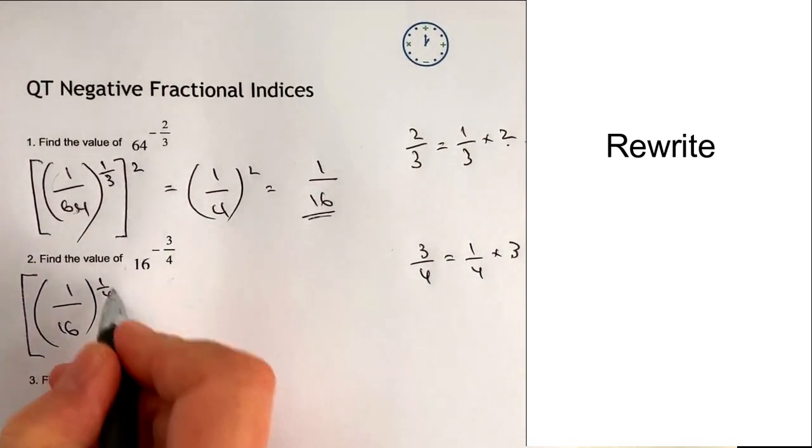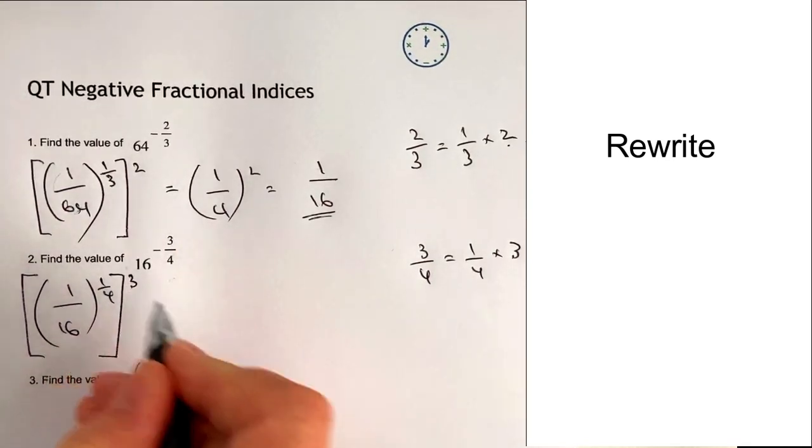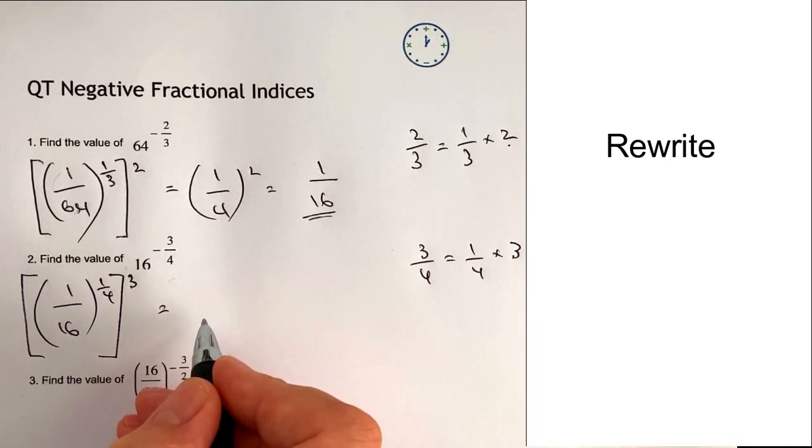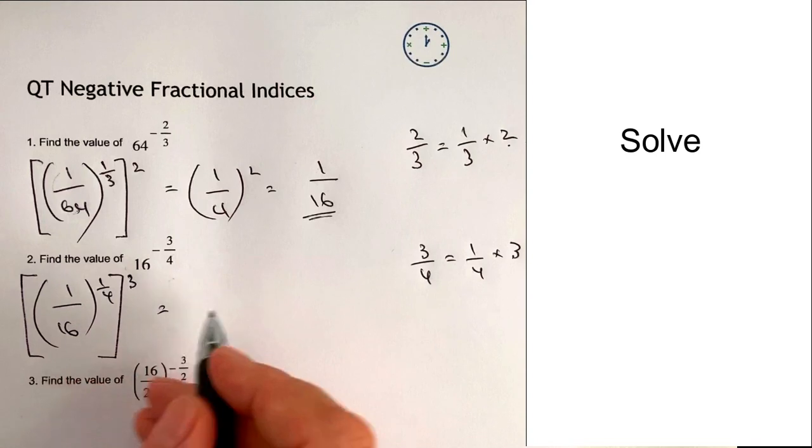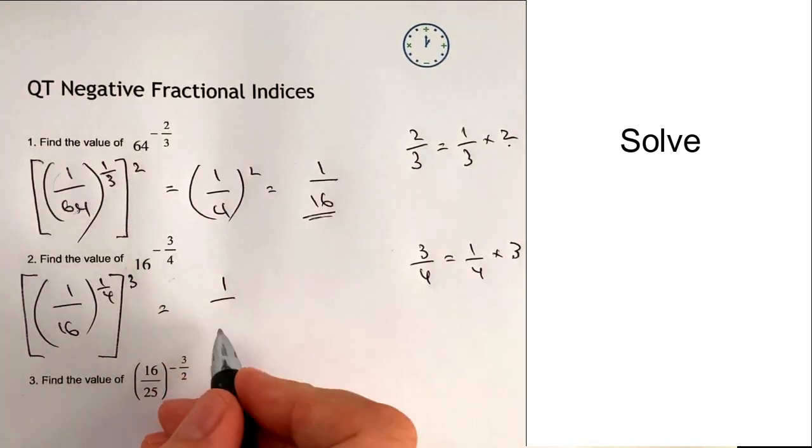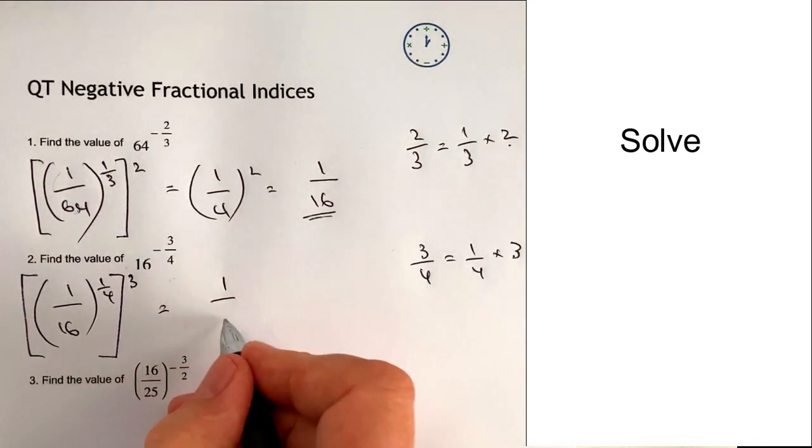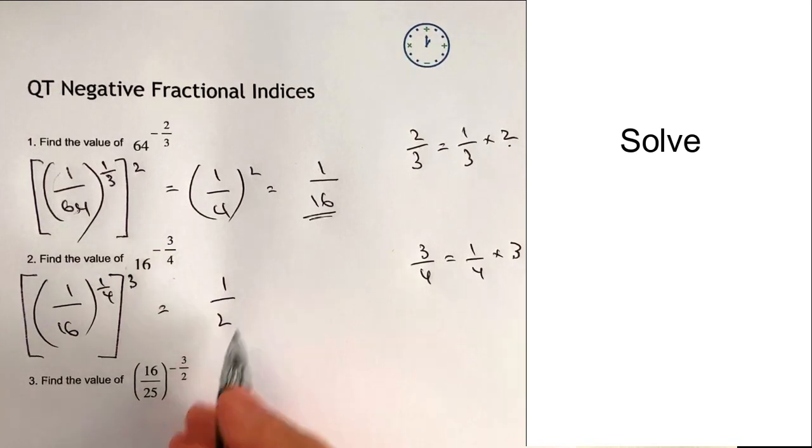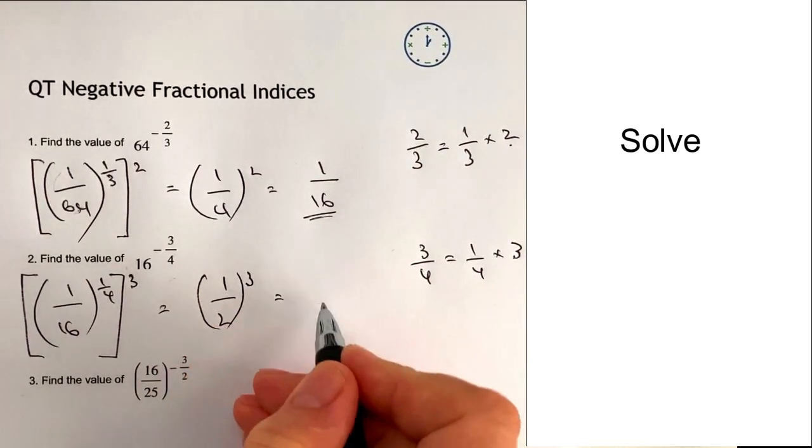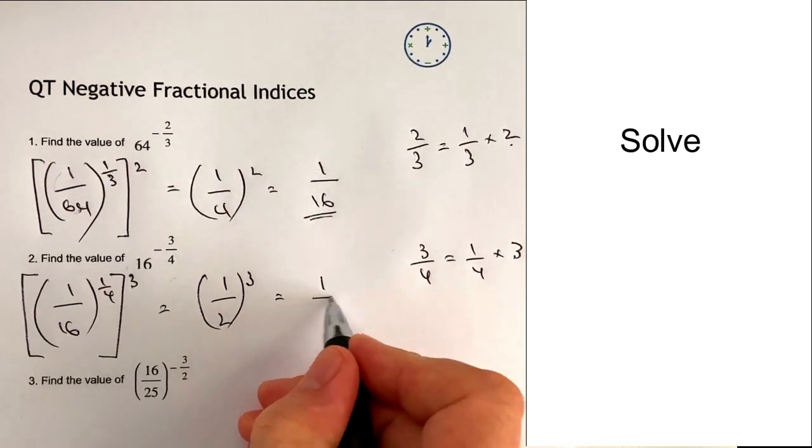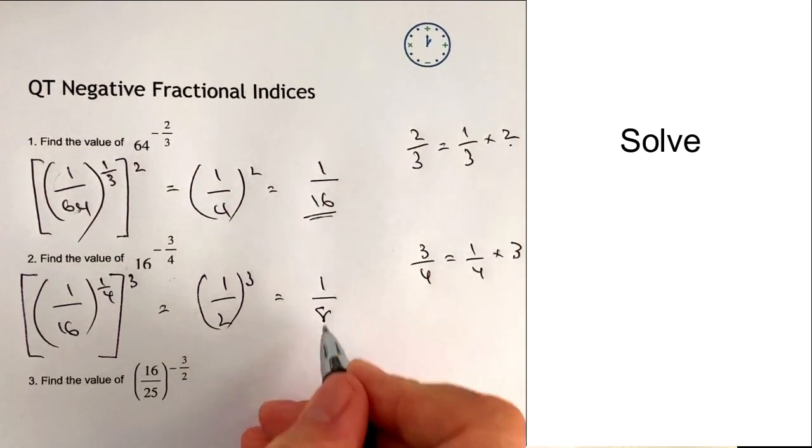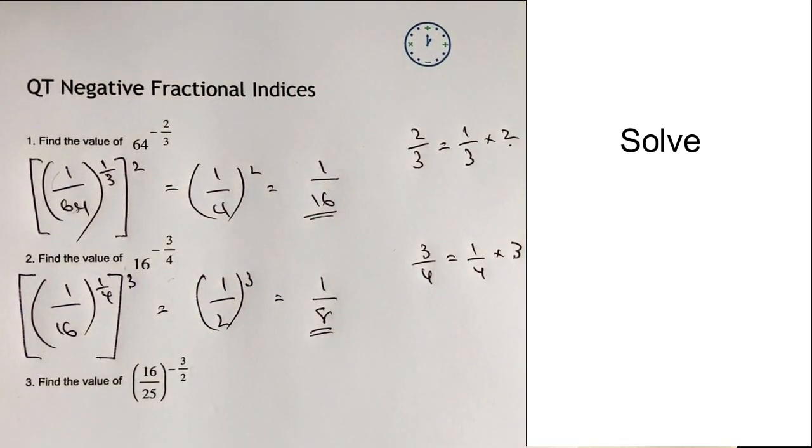So the fourth root of 1 is going to be 1 again, and the fourth root of 16 is going to be 2, because 2 times 2 times 2 times 2 is 16. And I'm going to then not forget to cube it, so that's going to be 1 cubed is 1 and 2 cubed is 8. Okay, so that is the answer to the second question.